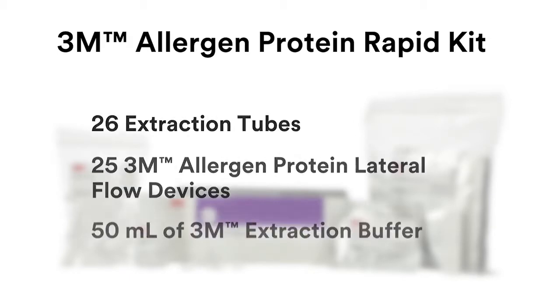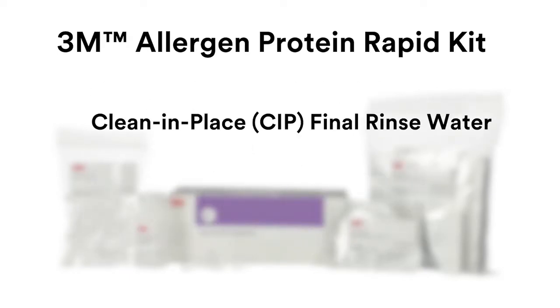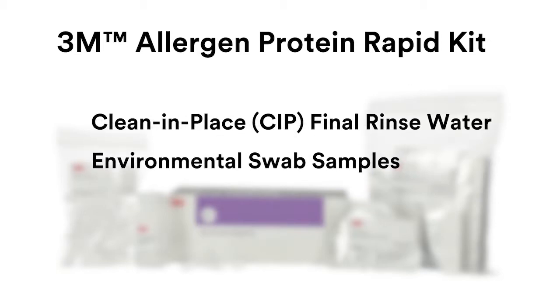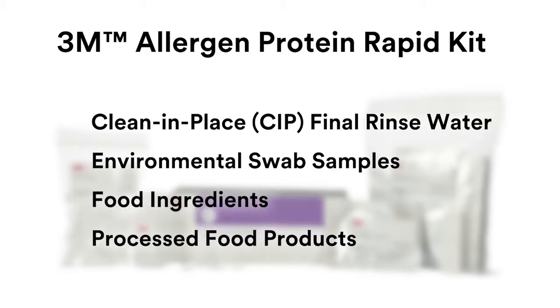The 3M Allergen Protein Rapid Kit is intended for screening for the presence of allergen proteins in clean-in-place (CIP) final rinse water, environmental swab samples, food ingredients, and processed food products.